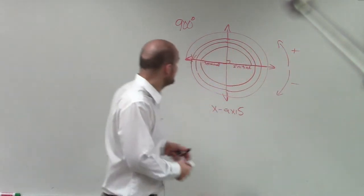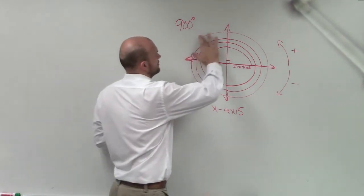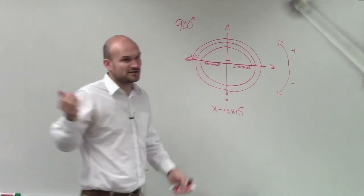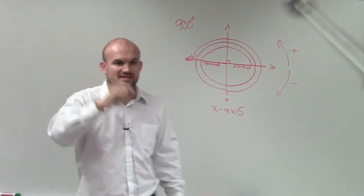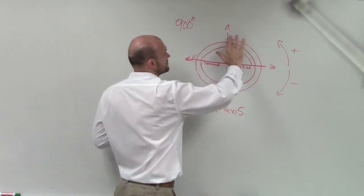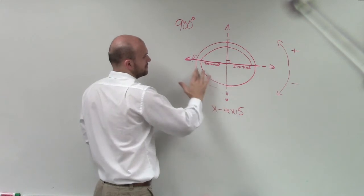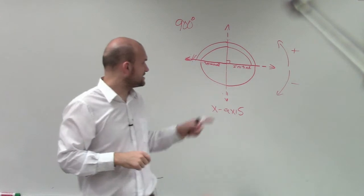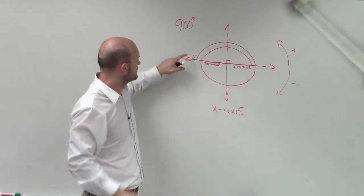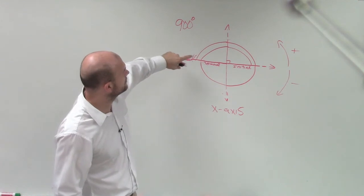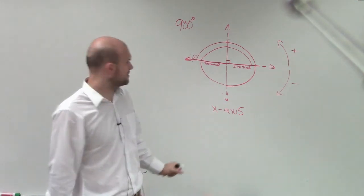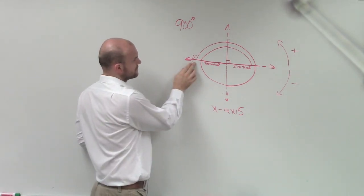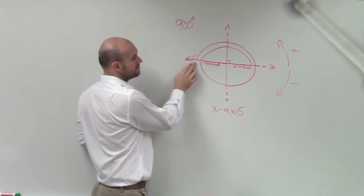So if I'm at 900, what I'm going to want to do is start subtracting 360, right? Because 900 is a pretty big number. We want to get it down to the smallest positive. So let's subtract 360. So I subtracted 360 once, 540.